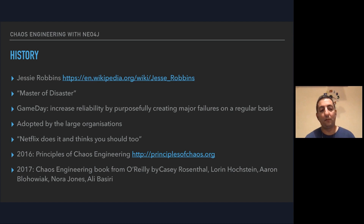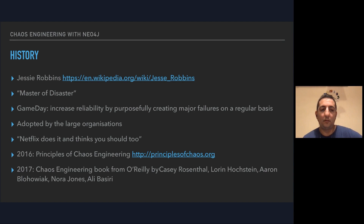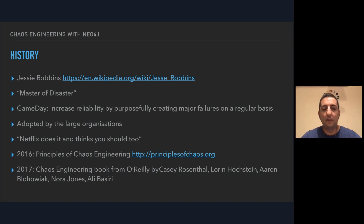You can mix engineering, psychology, and other disciplines together and use the benefits in IT. It was later adopted by many organizations — mainly the big ones: Google, Netflix, Facebook, Nokia, and many others. Netflix was the one who started promoting it on the internet. In 2016, the Principles of Chaos Engineering website was created — the manifesto of chaos engineering. Later there was a book from O'Reilly publisher, which is recommended if you are interested in chaos engineering.